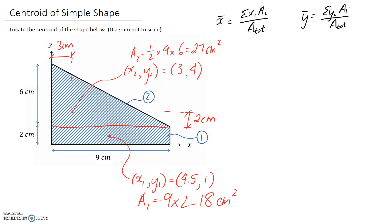Now we should be able to go ahead and apply our two different equations. We'll start with the x-coordinate. It's going to be equal to the x times a for each of the different components. Starting with the first one, our rectangle, x1 we said was equal to 4.5, and a1 we said was 18.